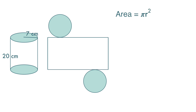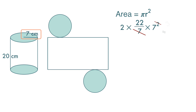The area of a circle is pi r squared. Here r is 7, so we have 22 over 7 times 7 squared. But we have two circles, so we times 2, and we get 308 cm².